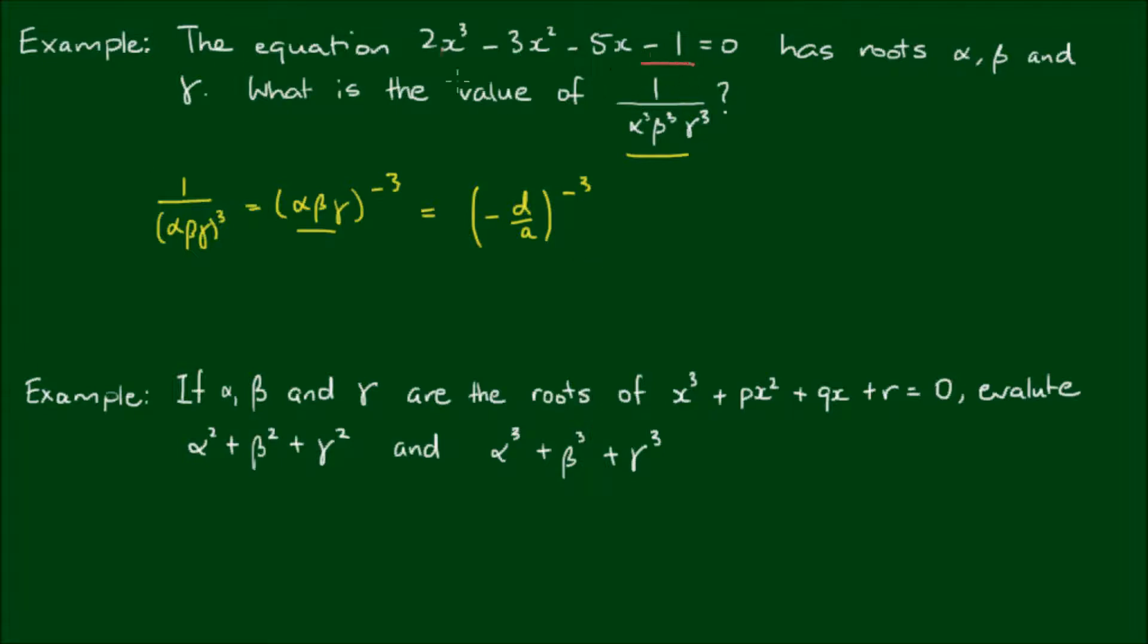So d in this case is negative 1, and a is 2. So negative d on a is equal to a half, positive a half. And of course, this is equal to 2 cubed. So taking the negative 1 into the parentheses, which in turn flips the fraction. So 2 cubed is equal to 8.